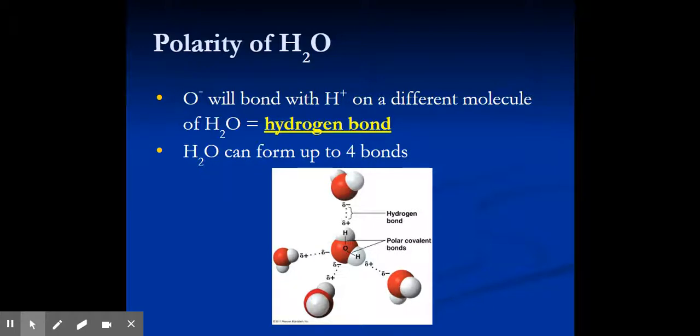Specifically, the hydrogen bonding is represented by the dashed lines. Notice how it's not a solid line. A solid line represents a covalent bond. In this case, we're talking about a hydrogen bond.